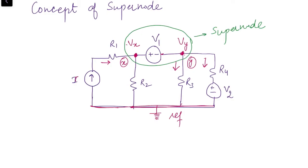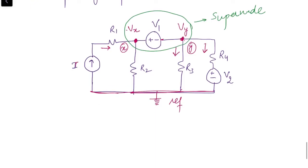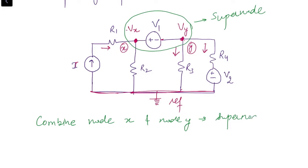In a super node we will have two equations: one by application of KCL, and the second is the constraint equation. We combine node X and node Y to make a super node, then apply KCL at the super node. When applying KCL, we write the current through each branch except the branch common between the two nodes — here, the branch containing voltage source V1 — which we leave out.